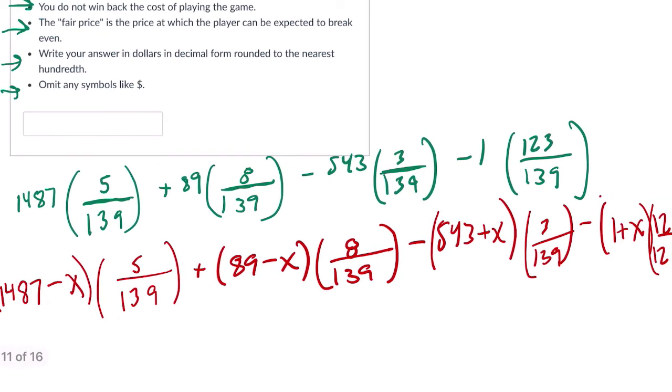Just realize that the first problem is modeling something different. The first problem is essentially finding what the average winnings will be. And then, from that, you can extrapolate that the fair price of the game is the opposite of that number.